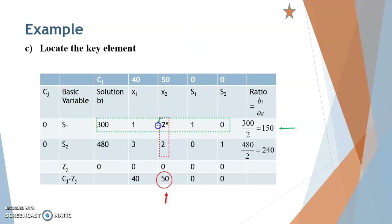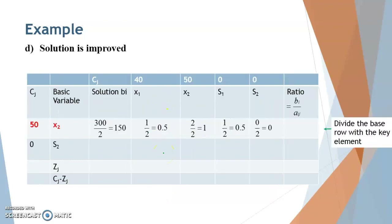X2 is the incoming variable and S1 is the outgoing variable. Locate the key element at the intersection of the key row and key column — it is 2. Now improve the solution: substitute X2 as the basic variable with its objective function coefficient of 50. Divide the entire key row by the key element 2, giving: 300/2, 1/2, 2/2, 1/2, and 0/2.